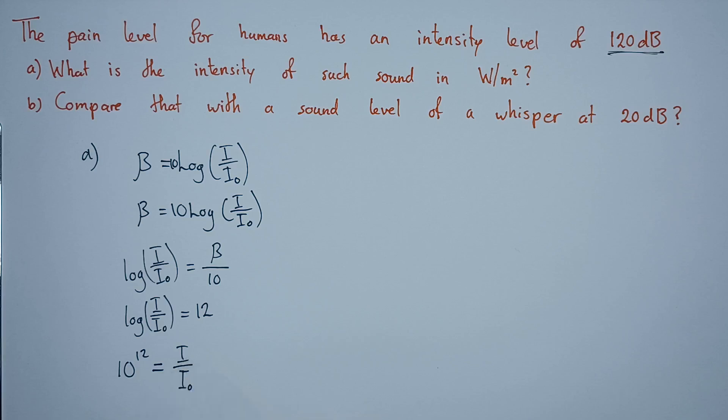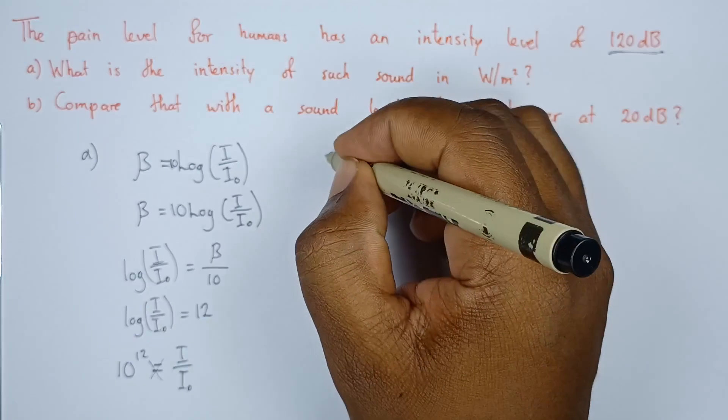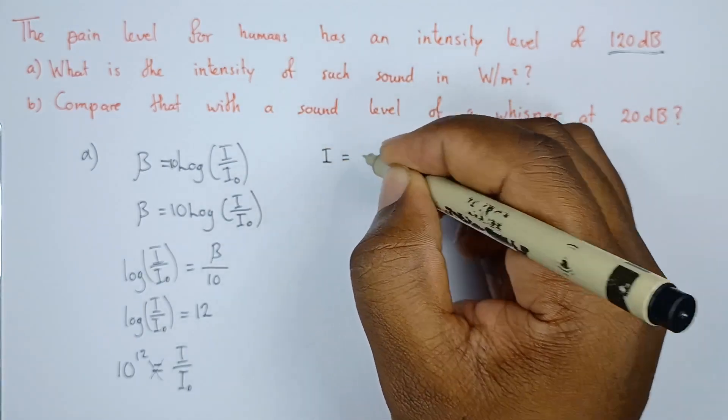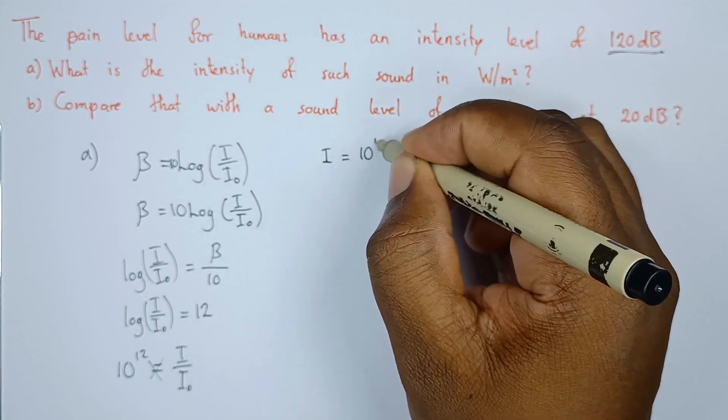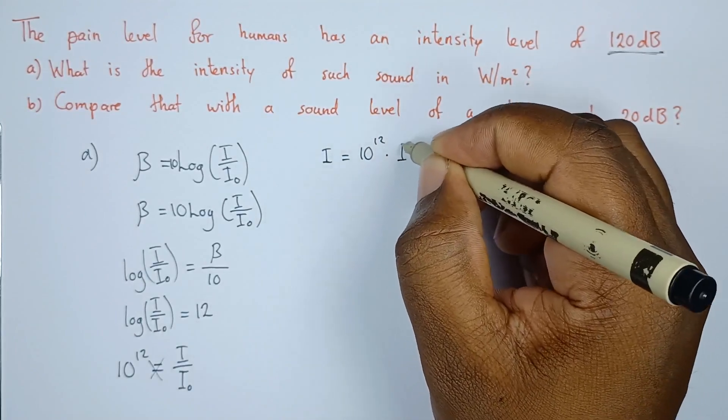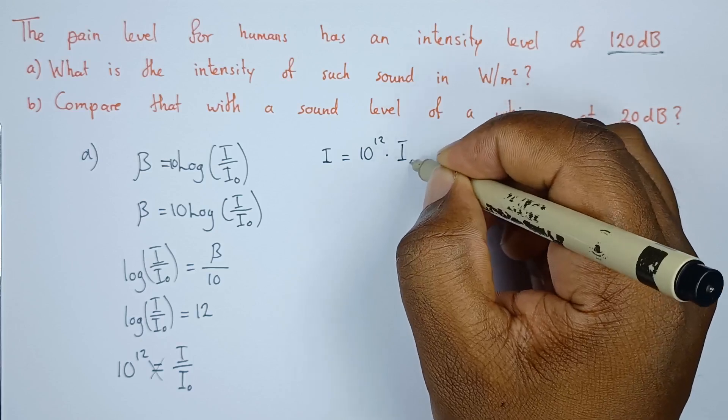Since we're looking for I, we can cross multiply. Hence, I equals 10 to the power 12 multiplied by the threshold of intensity, I naught.